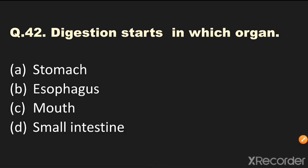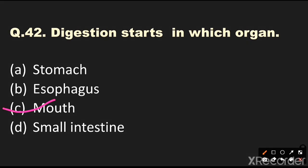Question number 42: Digestion starts in which organ? Options are stomach, esophagus, mouth, or intestine. The answer is mouth. Digestion starts in the mouth itself and it continues in the stomach, small intestine, and large intestine.